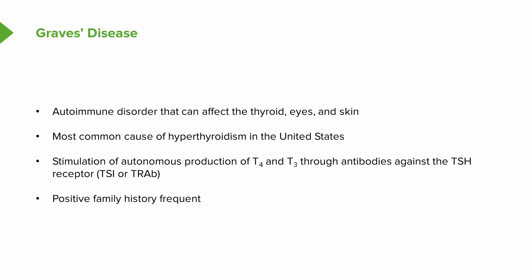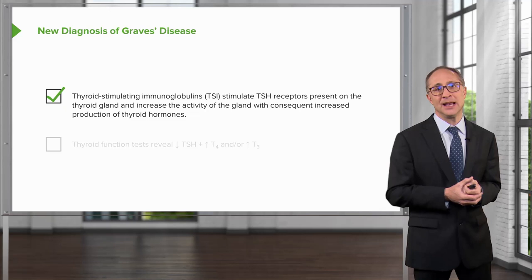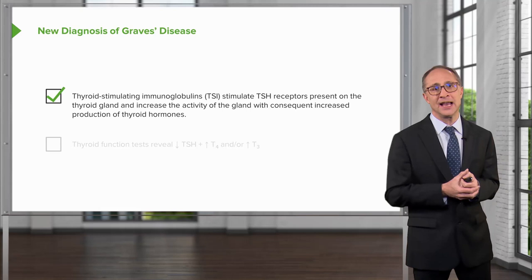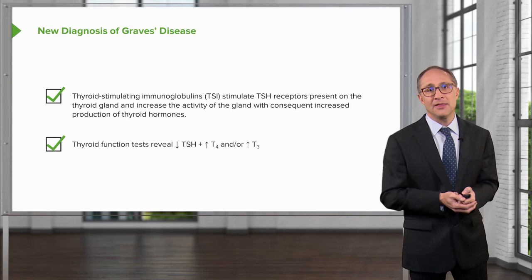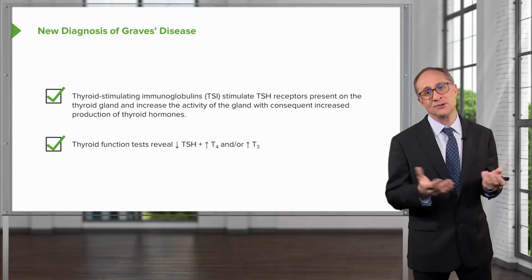A new diagnosis of Graves' disease — one would start by checking thyroid-stimulating immunoglobulins, which are there to stimulate TSH receptors present on the thyroid gland, which in turn increase the activity of the gland with consequent increased production of thyroid hormones, usually T4 and occasionally T3. Thyroid function tests reveal the classic features of low TSH, high T4, and/or T3.